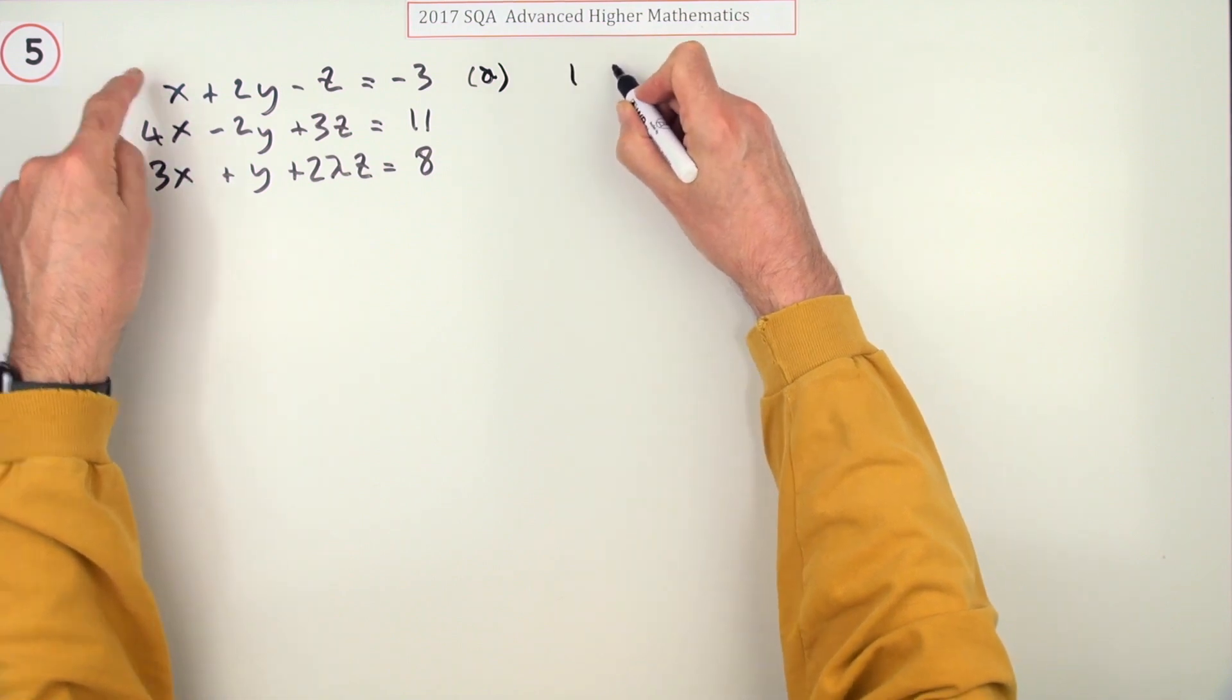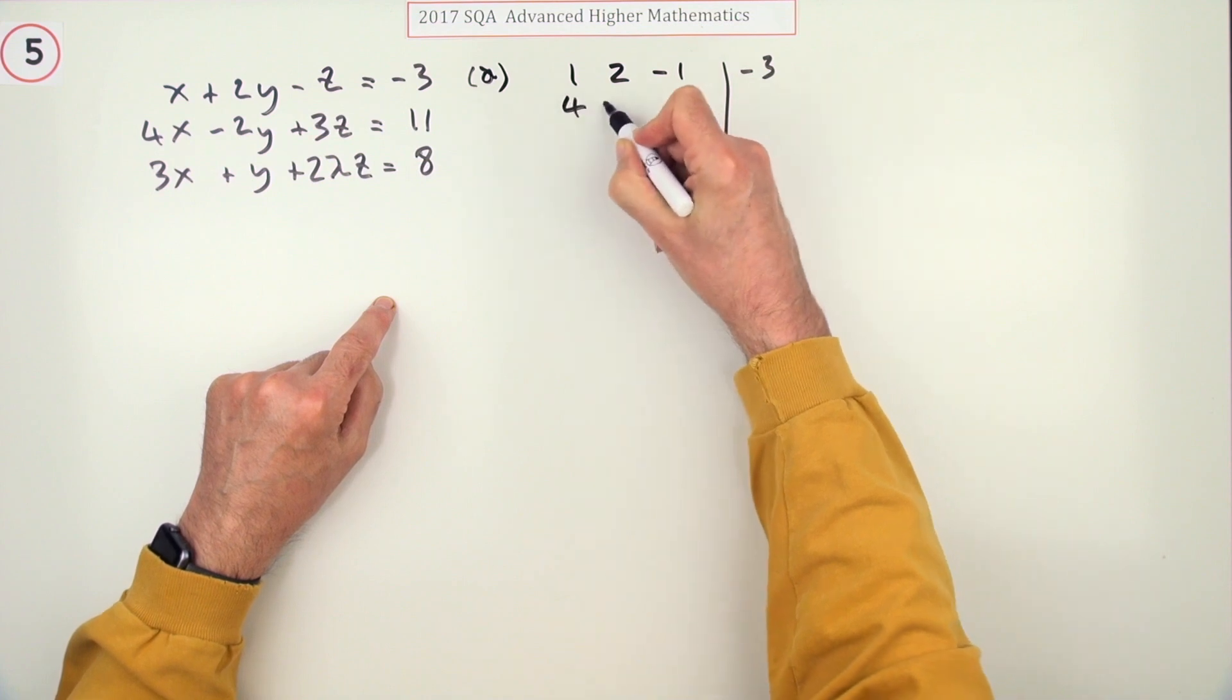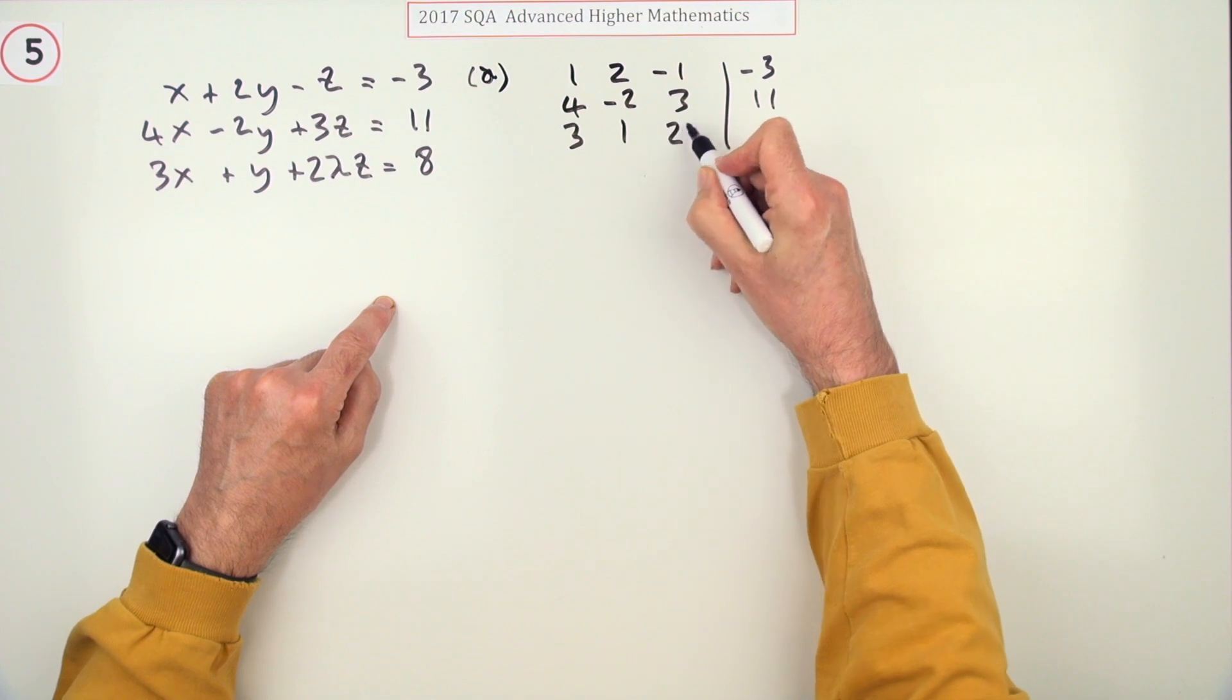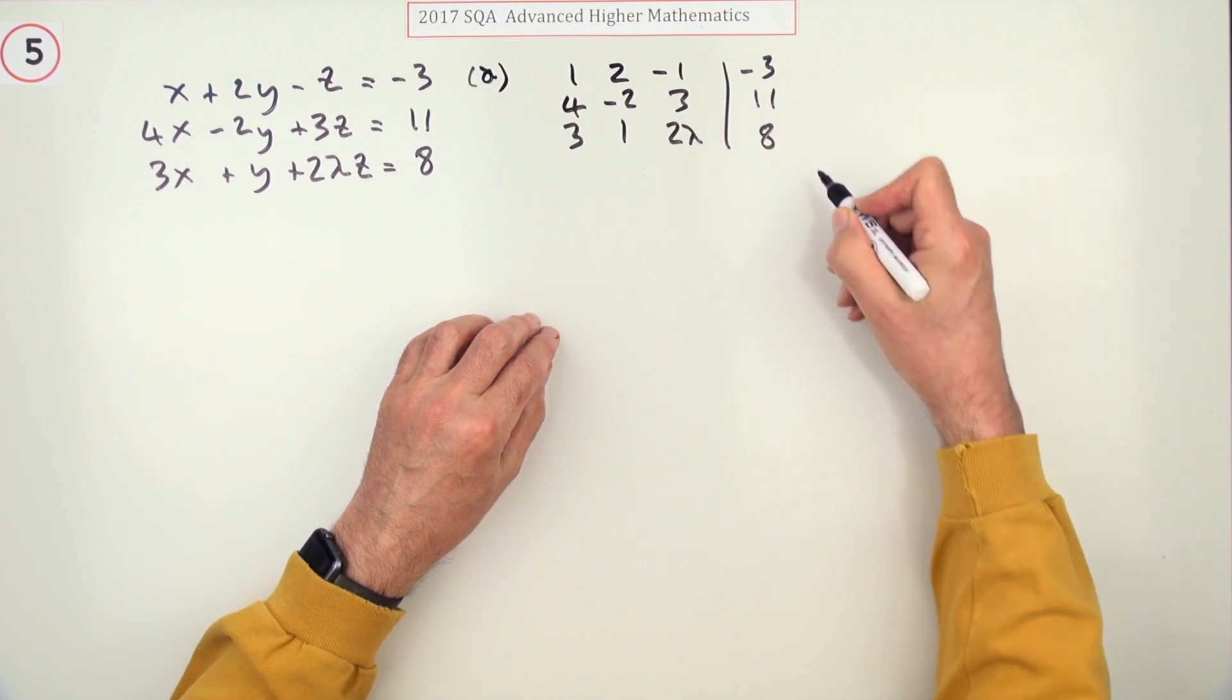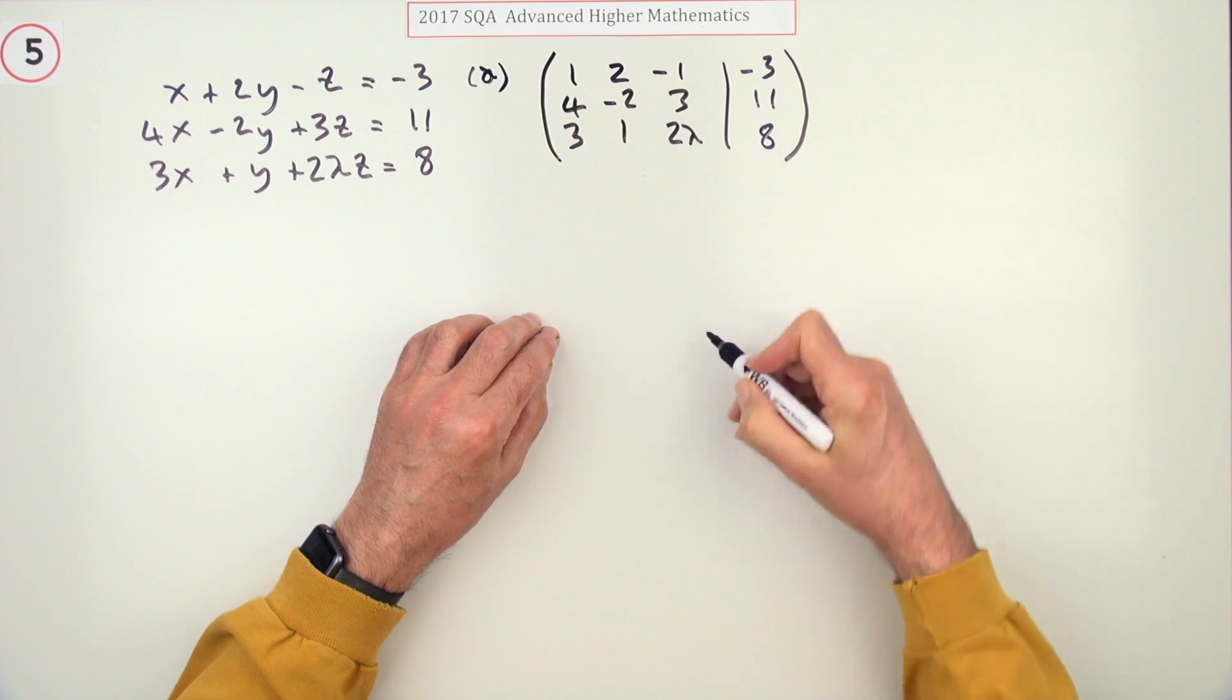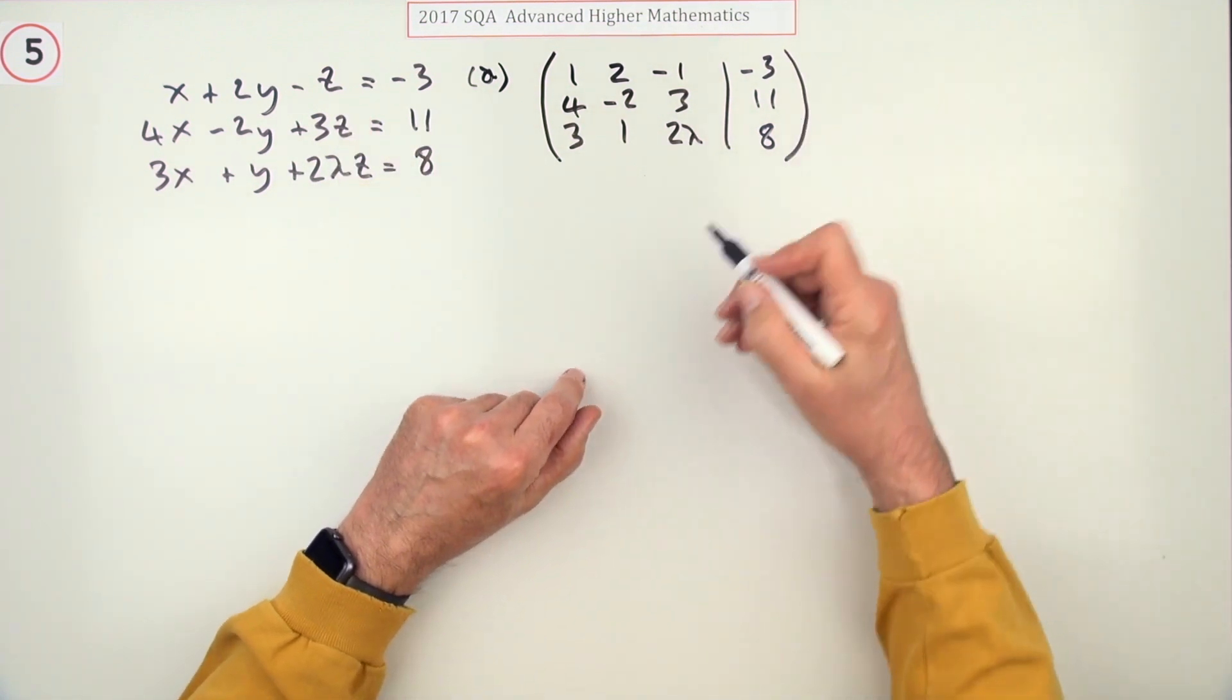So that would be 1, 2, negative 1, negative 3, 4, negative 2, 3, 11. Just be careful with your numbers. 3, 1. Of course you might need more space here because that's going to expand since it can't gather up. It's not like a piece of arithmetic. Now I'm just going to actually make a matrix. I imagine a few just leave the numbers lying about. So there's the first part.